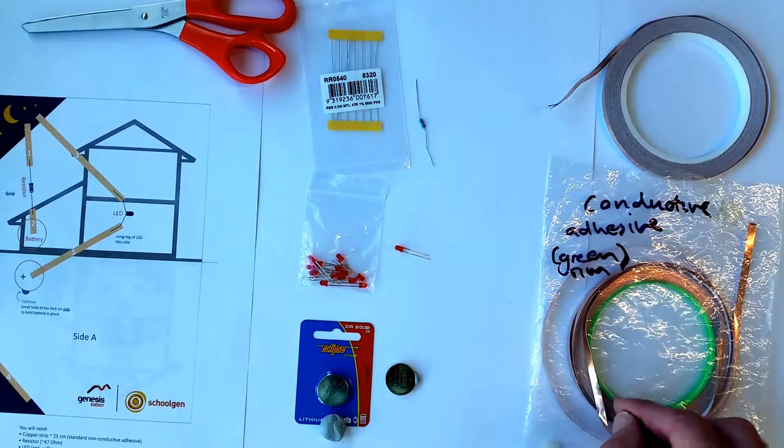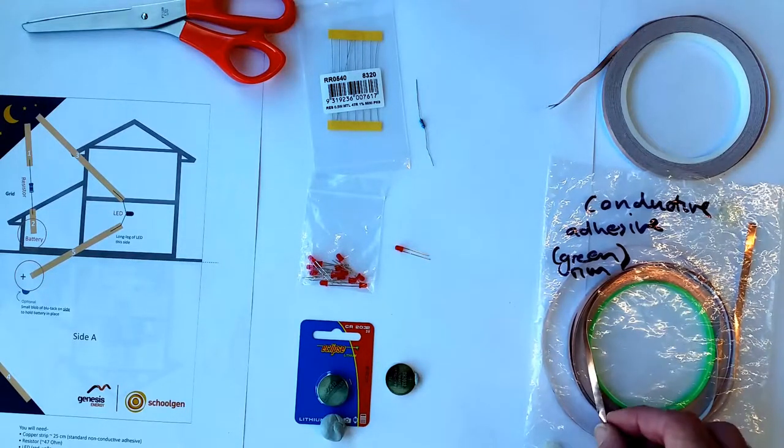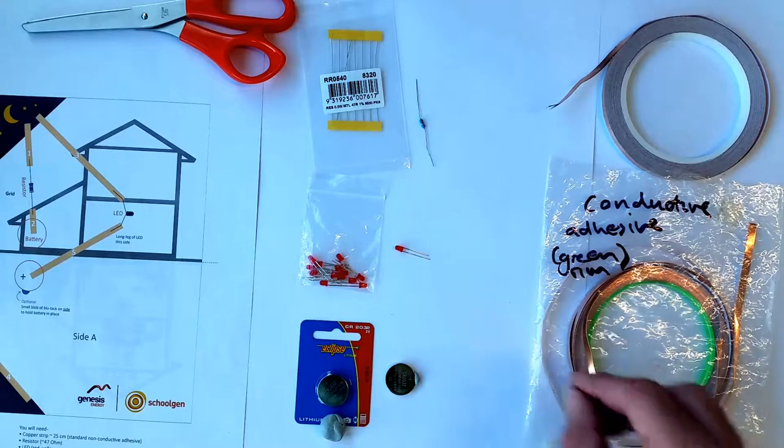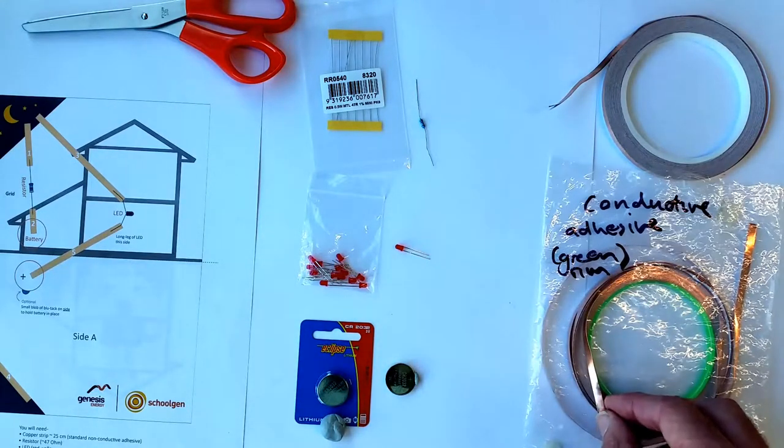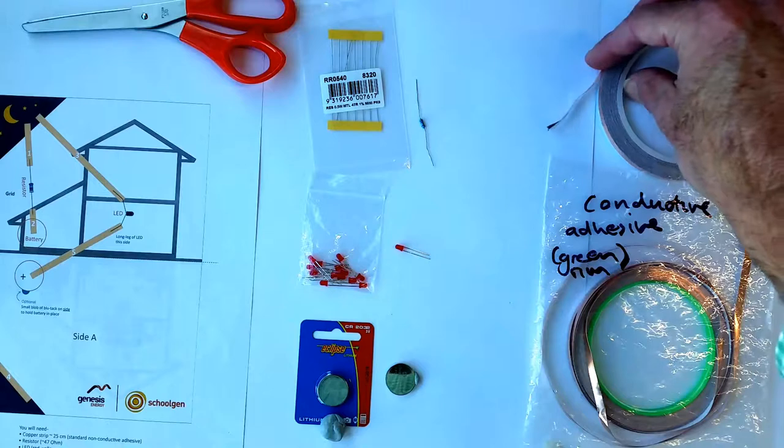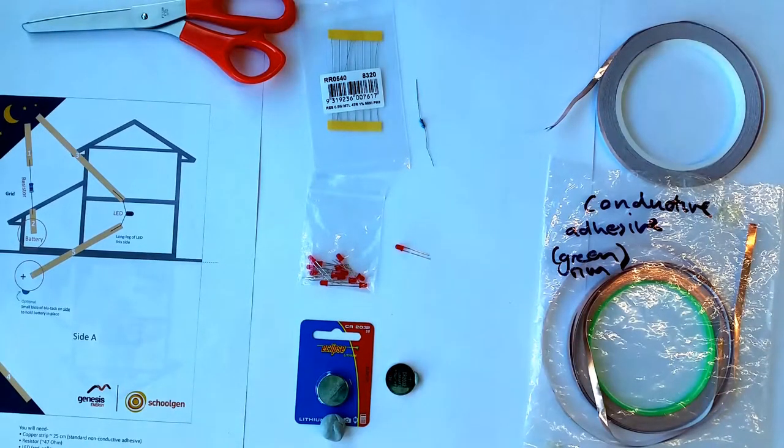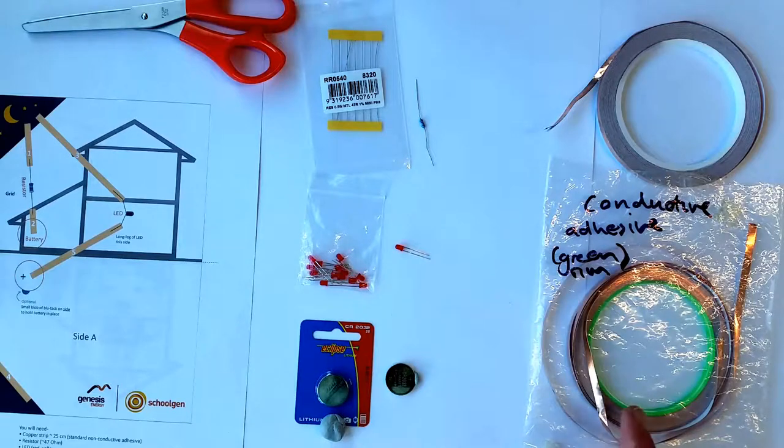We use this to stick down the components—the LED and the resistor—onto the base copper tape. This will make a much better circuit. You can use sellotape, but it's really recommended that you get some of this conductive adhesive tape.